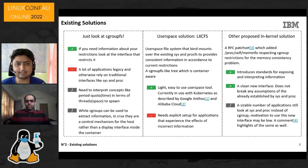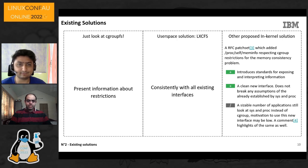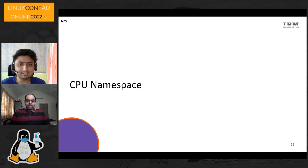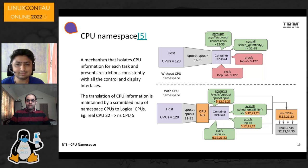What if we could take good points from all three solutions and build something around them? What if we could present information about restrictions consistently with existing interfaces of sys and proc, and introduce standardization of how to expose and interpret the solution via an in-kernel solution? Introducing CPU namespace: we basically try to isolate CPU information for each task based on whatever restrictions have been applied to it via the control and display interfaces, making that consistent with the rest of the interfaces.